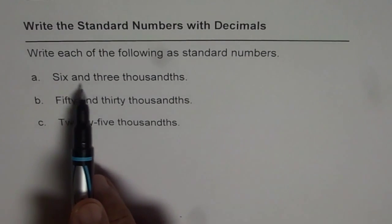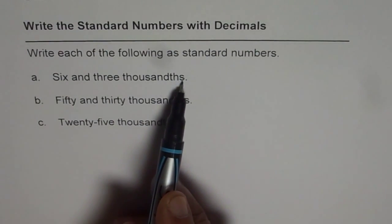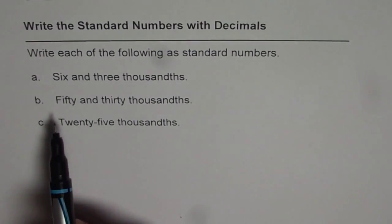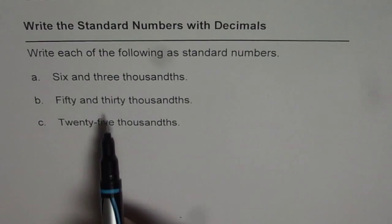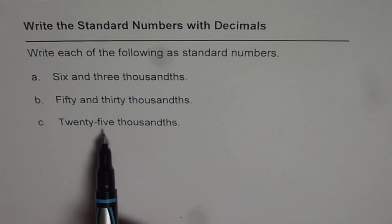First one is six and three thousandths. So when it is THS at the end, it means we are talking about decimal numbers. And then we have fifty and thirty thousandths, twenty-five thousandths.